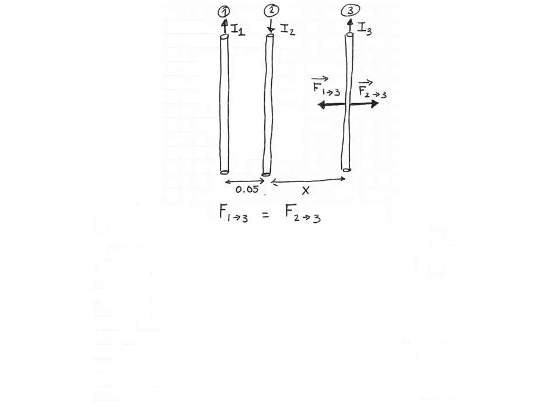We want the force that 1 exerts on 3 to be equal to the force that 2 exerts on 3. That force will be given by F = I L B sin θ, where θ is the angle between the magnetic field exerting the force and the wire that is feeling that force. For example, for the force that wire 1 exerts on wire 3, wire 3 feels the force and wire 1 is creating the magnetic field. So it's I₃ L B₁ sin θ, where θ is the angle between the magnetic field of wire 1 and current I₃. To find that angle, we need to draw the magnetic fields of our two wires.